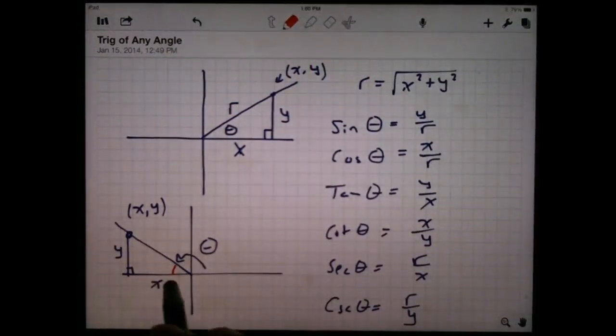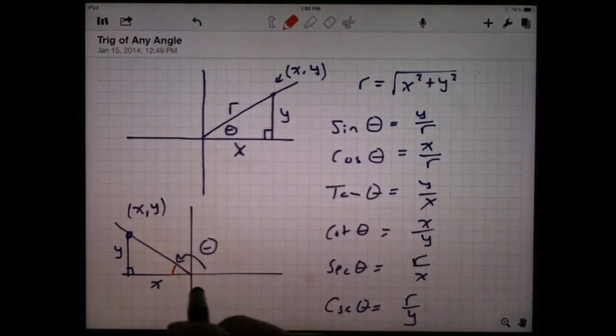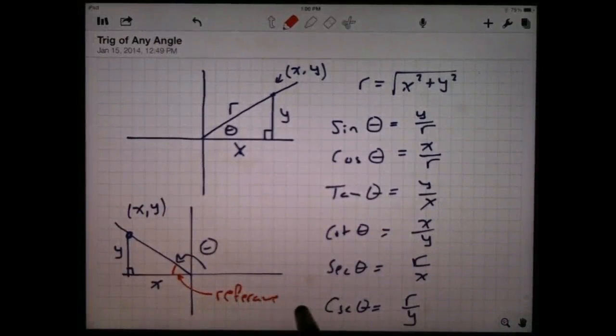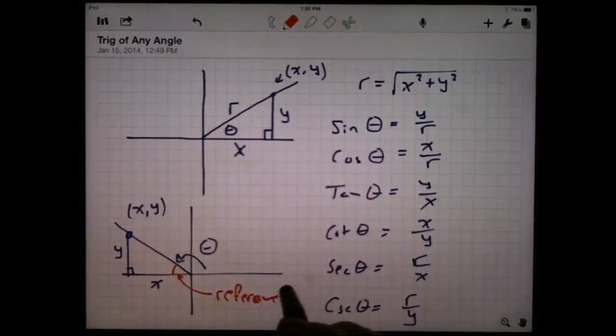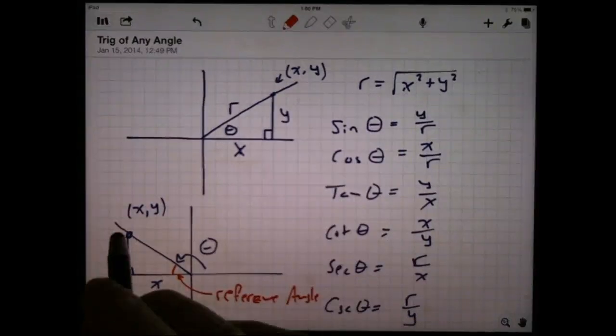This triangle is called the reference triangle, and this little angle on the inside here, the angle between the terminal ray and the x-axis, sort of the smallest possible angle there, that's what's called the reference angle. Reference angle.